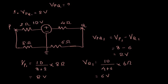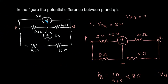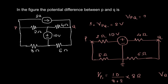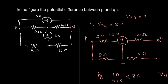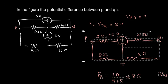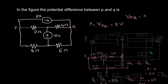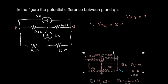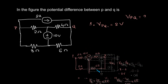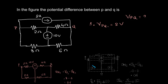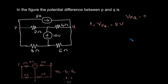By superposition, we now put the current source back in and remove the voltage source. When we remove the voltage source, we short-circuit it to make the voltage across it zero. We will redraw the circuit once again.